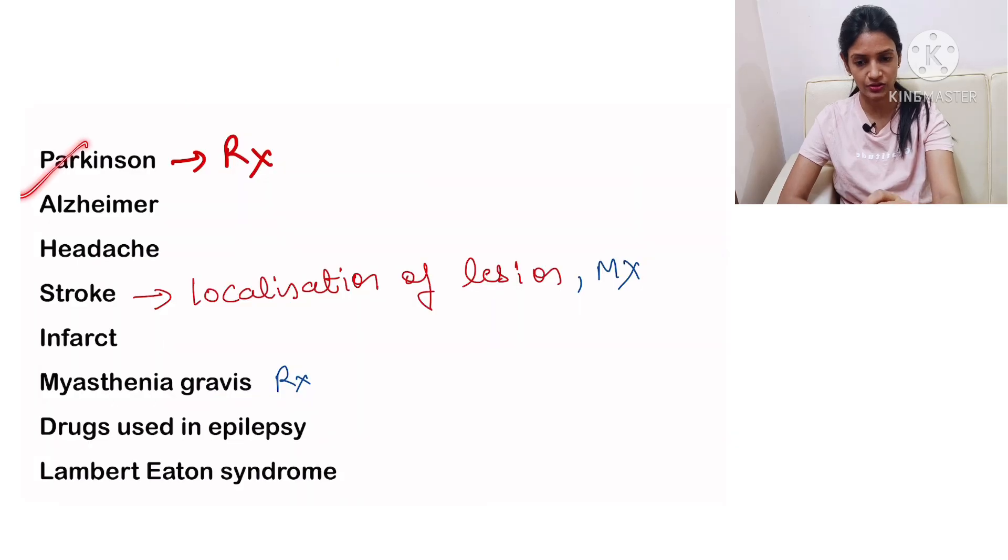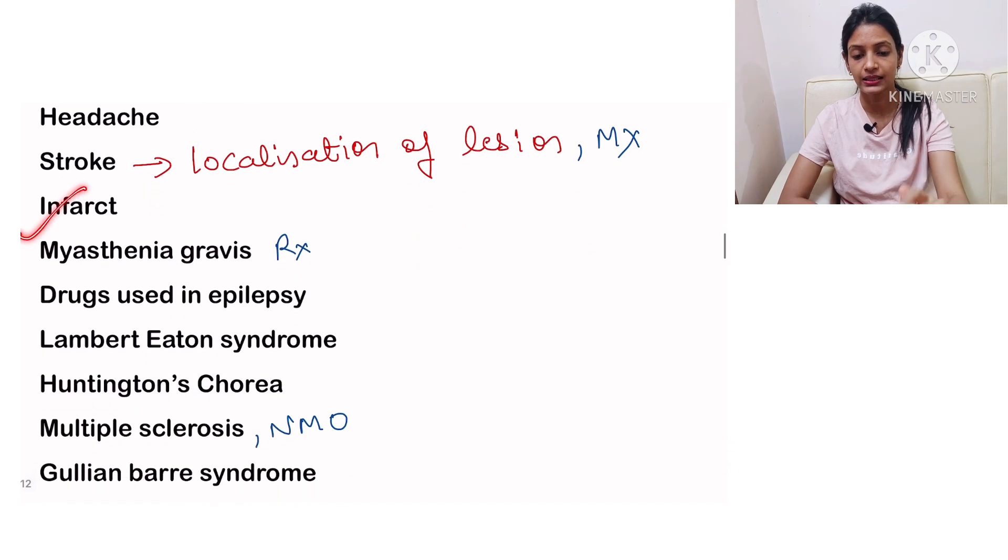In Parkinson's, specific treatment, then Alzheimer's, headache. In stroke you must be reading its management and localization of lesion, then infarct. In myasthenia gravis, again it's important to read the treatment. Expect drugs used in epilepsy: valproate, carbamazepine.